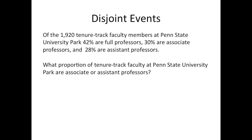Of the 1,920 tenure track faculty members at Penn State University Park, 42% are full professors, 30% are associate professors, and 28% are assistant professors. What proportion of tenure track faculty at Penn State University Park are associate or assistant professors? Full professor, associate professor, and assistant professor are all disjoint events — they can never happen together. One starts as an assistant professor, then gets promoted to associate professor, and finally to full professor. You can never fit into more than one of these classifications at once. These are three disjoint events.